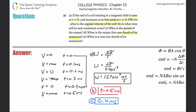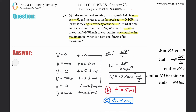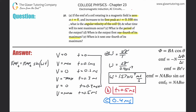Letter D: when is the output first one-fourth of its maximum? We can use the EMF formula: at some time t, EMF equals EMF-max multiplied by the sine of angular velocity times time. They want to know when EMF is one-fourth of the maximum, so if I divide both sides by EMF-max I get the ratio equal to one-fourth, which equals sine of omega times t. The angular velocity we just found is 1.57 times 10 to the fourth, and they're asking for the time.